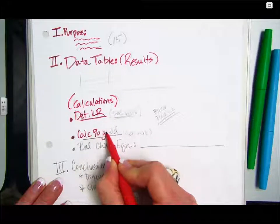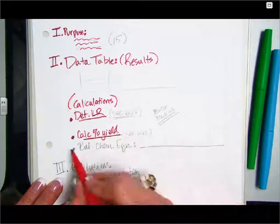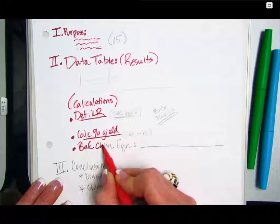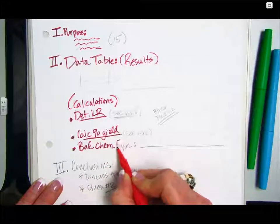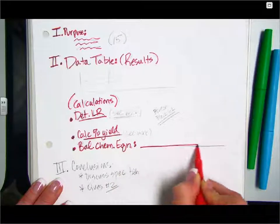Make sure you show your work for determining your limiting reactant calculation. Also, calculating your percent yield. Make sure you show your work for that. Include your balanced chemical equation also in this section.